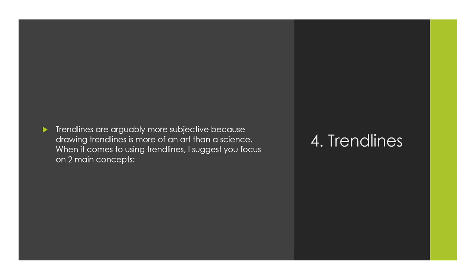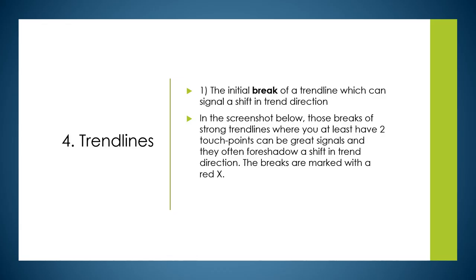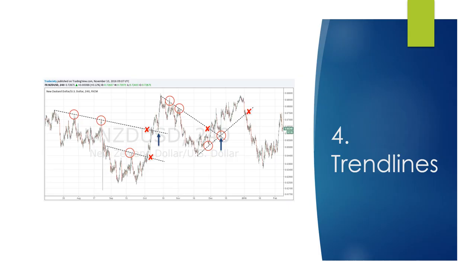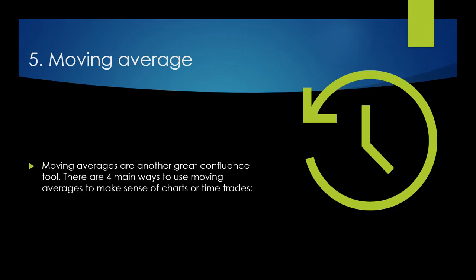Trendlines are arguably more subjective because drawing them is more of an art than a science. Focus on two main concepts: the initial break of a trendline, which can signal a change in direction, and having a valid trendline — which requires three touches. Once you have three touches, the trendline you drew is validated. After a break of that trendline, it is no longer valid. You can see on this chart how often trendlines break and how little they're validated.